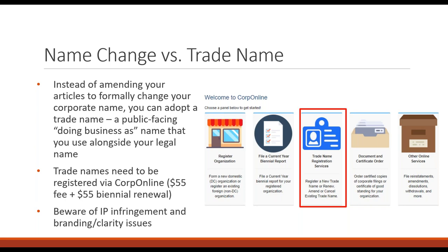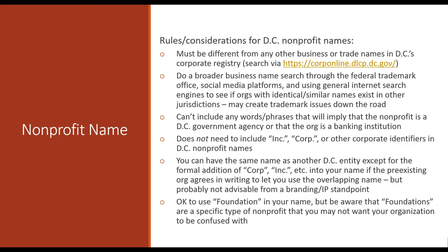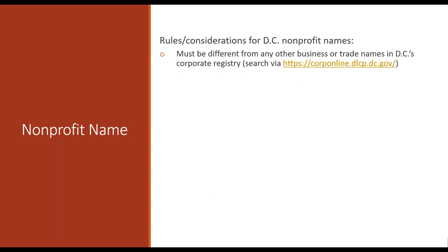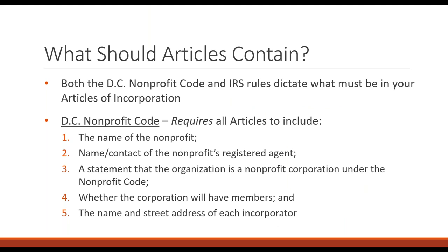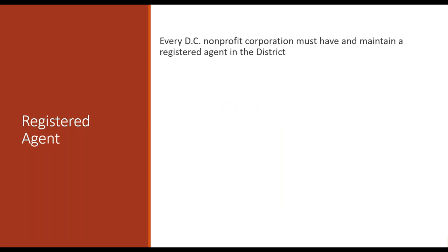Okay, that's about the name. Another thing people might notice when we talked about the DC Nonprofit Code requirements for articles is that you have to list a registered agent. Let me talk about what that is.